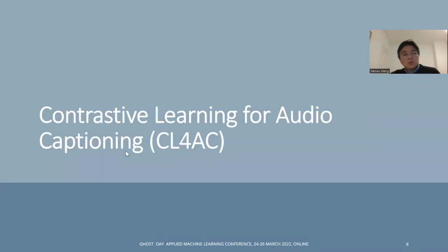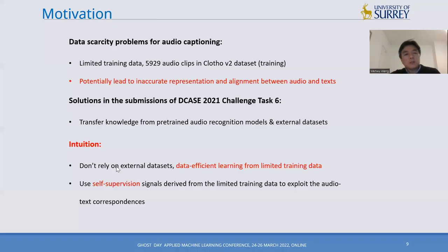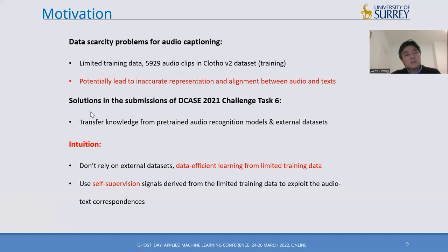We discuss contrastive learning for audio captioning. The motivation is the data scarcity problem: training data is often limited in number of audio clips — for example, in the Clotho V2 dataset we only have about 5,900 audio clips. To address this problem, we could use data augmentation techniques such as mixing up existing training data to generate more examples, or transfer learning by pre-training a model on large-scale datasets.